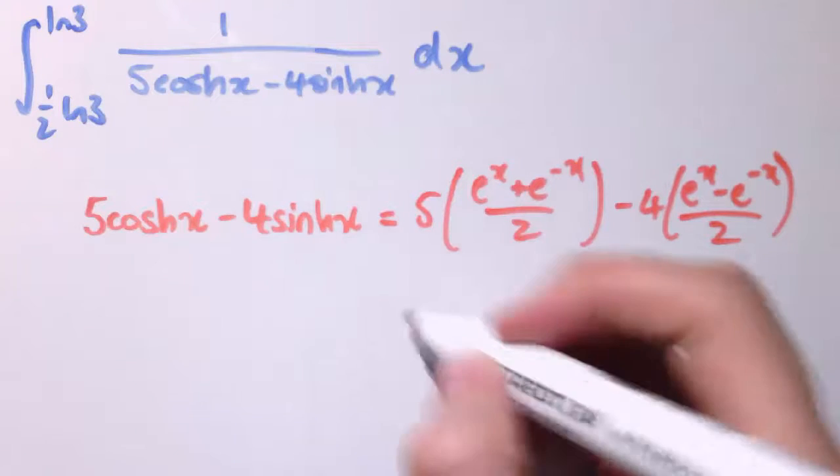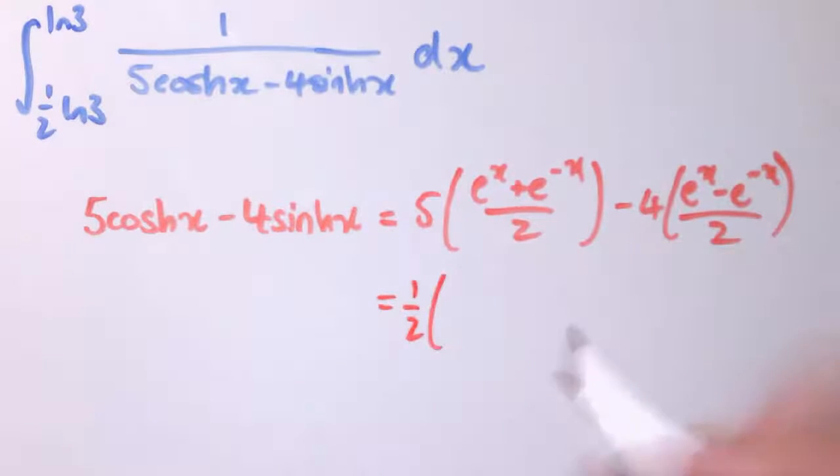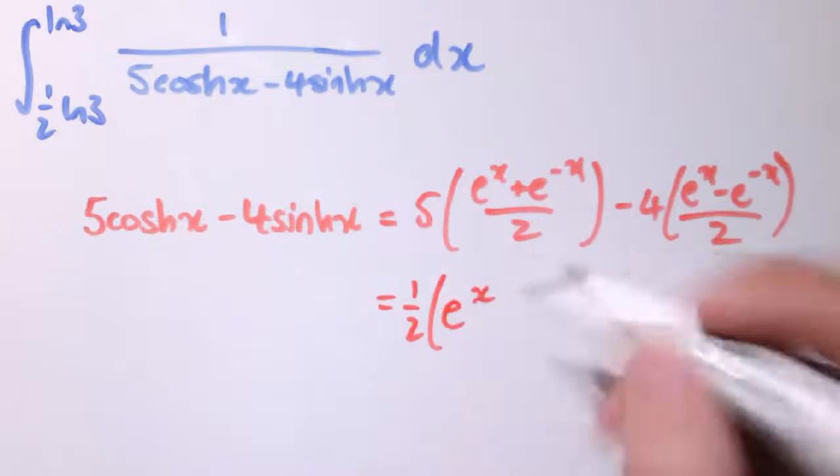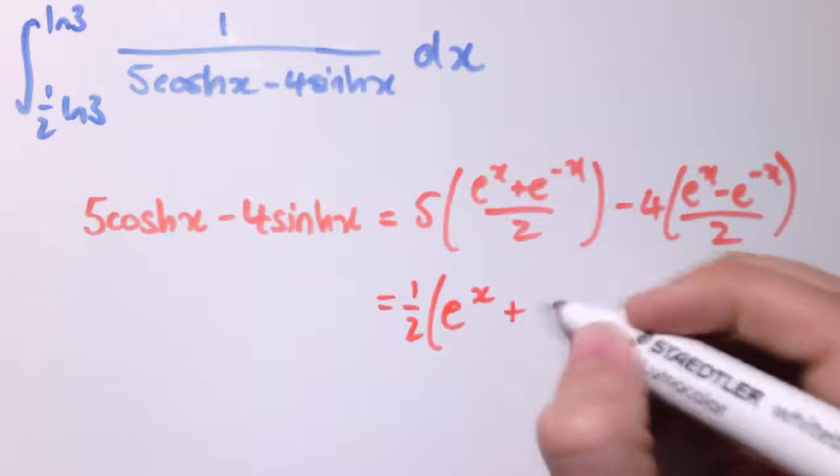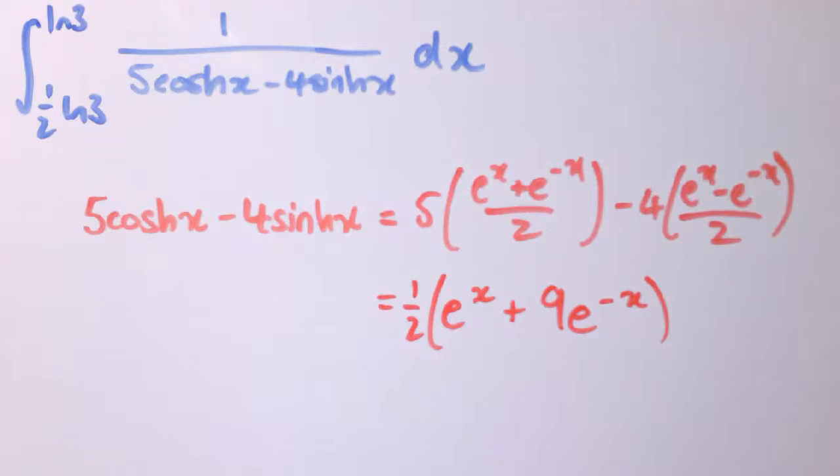So let's pull the half out. And let's say we've got, then, a half times 5 lots of e^x but then minus 4 lots of e^x. So that would just be e^x. And I've got 5 lots of e^(-x) minus minus 4 lots of e^(-x). So that's plus 9e^(-x).